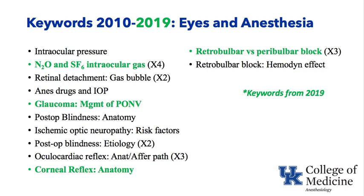This is published and distributed to all who have taken the exam and to programs. Keywords at the top left focus on things like intraocular pressure, the effects of some of our anesthetics on intraocular pressure, on injected gas bubbles like sulfur hexafluoride, drugs that we manage post-operative nausea and vomiting with and how they can affect glaucoma — scopolamine being the example. Also covered: blindness after surgery with a focus on ischemic optic neuropathy, reflexes such as the oculocardiac and corneal reflex, and retro and peribulbar blocks.